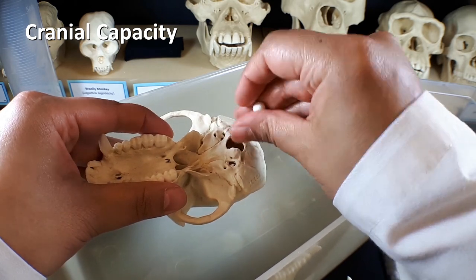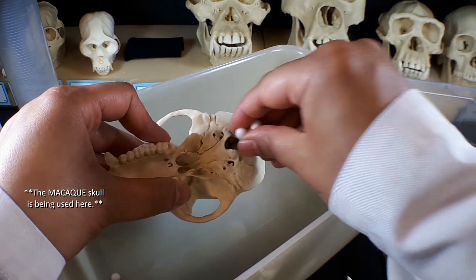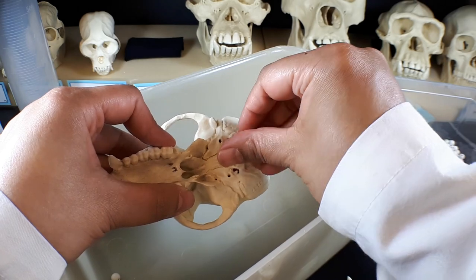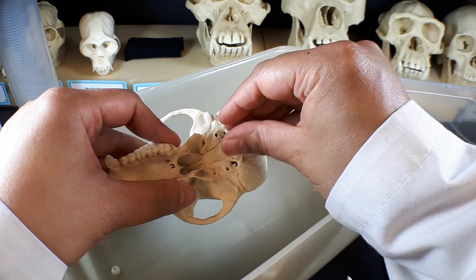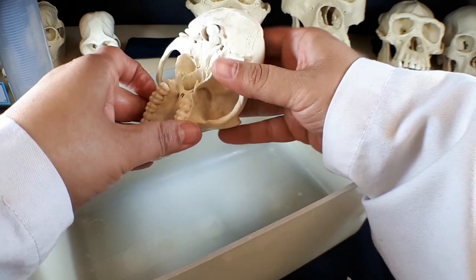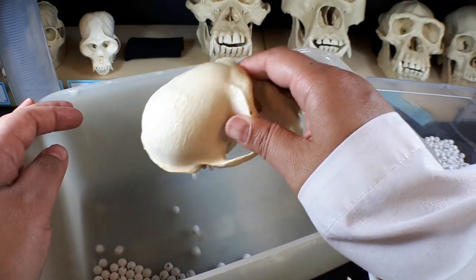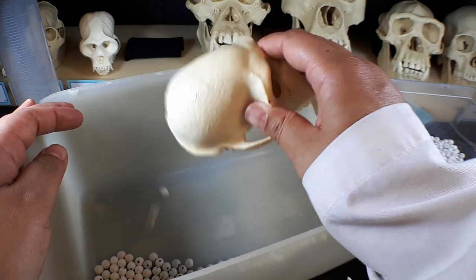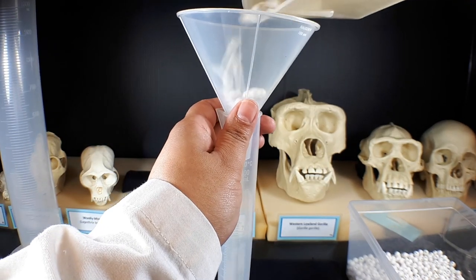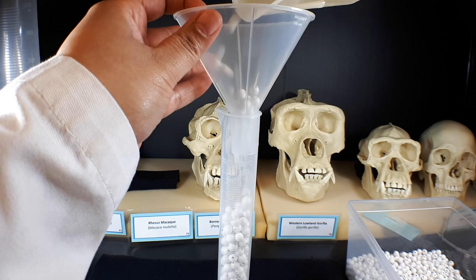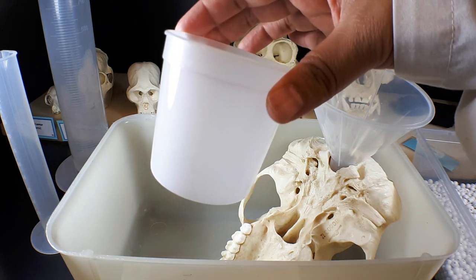Measure the cranial capacity by carefully filling each skull with beads. Work over an empty bin to catch any stray beads and be extremely careful not to damage the skulls during this procedure. Once the skull is full and the beads are level with the opening of the foramen magnum, you can dump the beads into the empty container. Once the skull is completely empty, carefully pour the beads into a graduated cylinder and record the total volume needed to fill the cranium. While the smaller skulls need to be filled by hand, you may use the funnel and plastic cup to assist filling larger skulls.